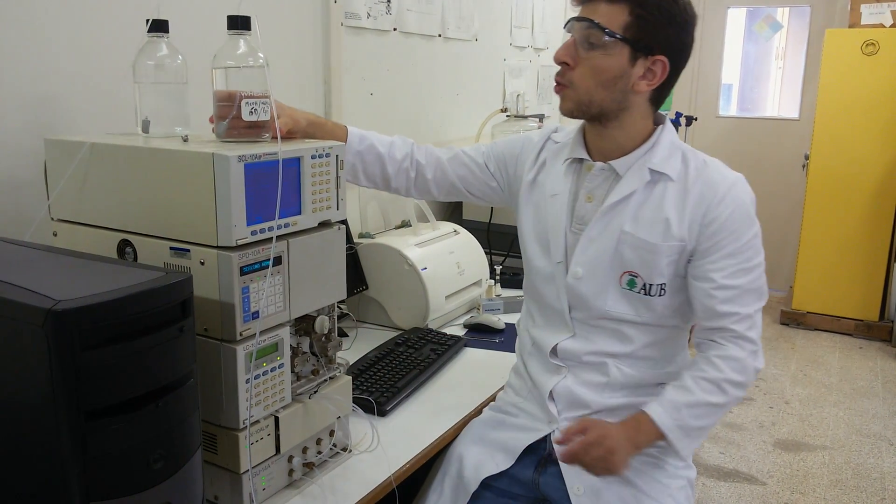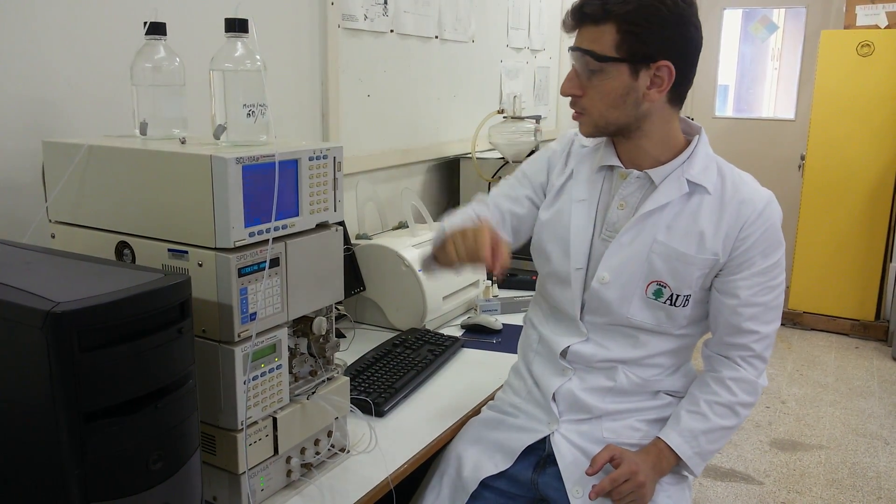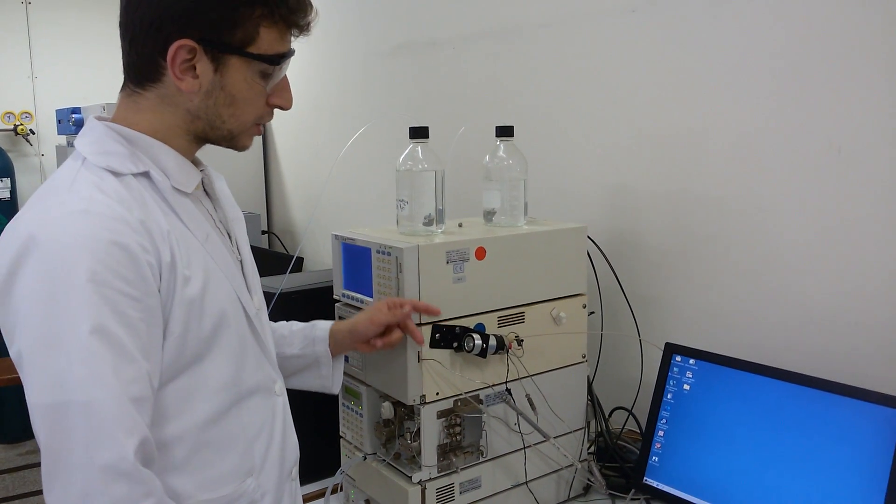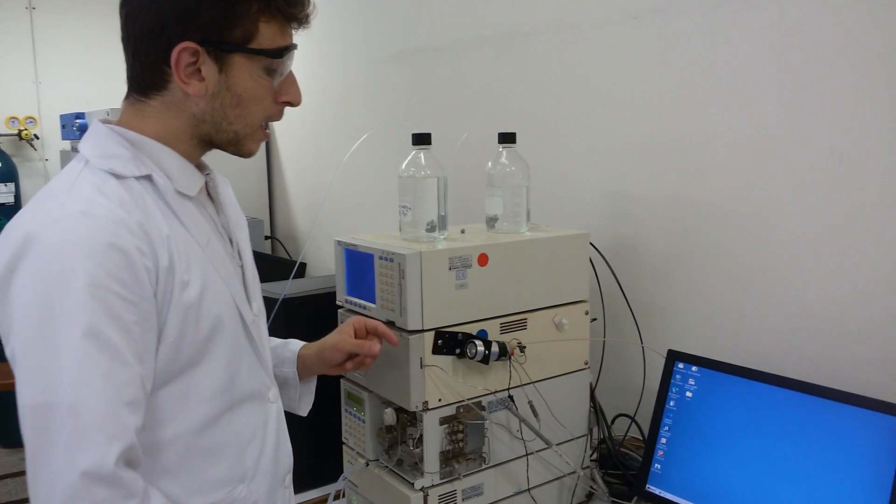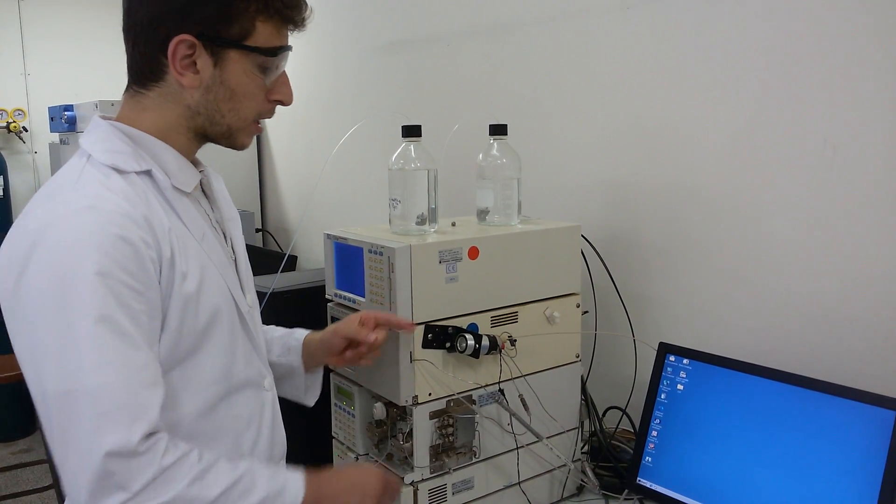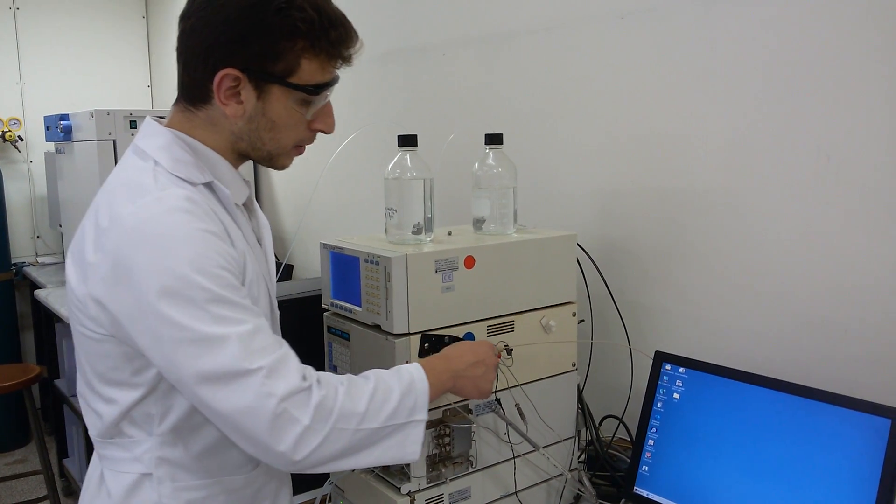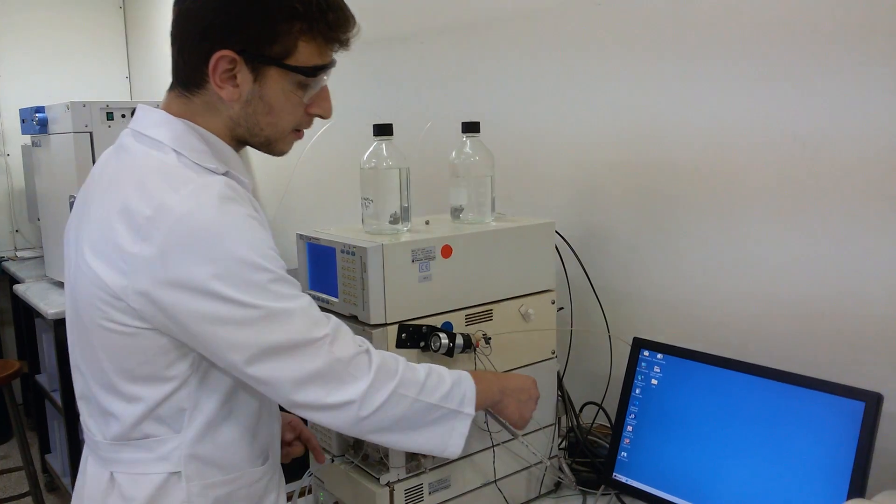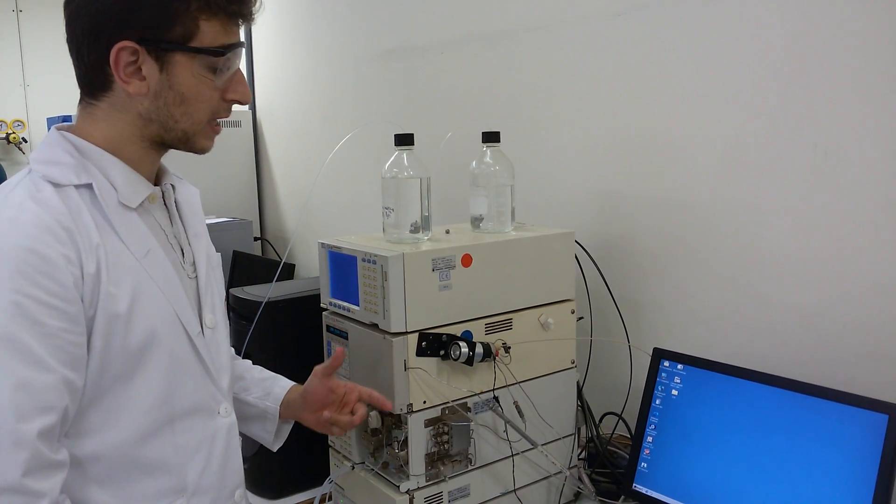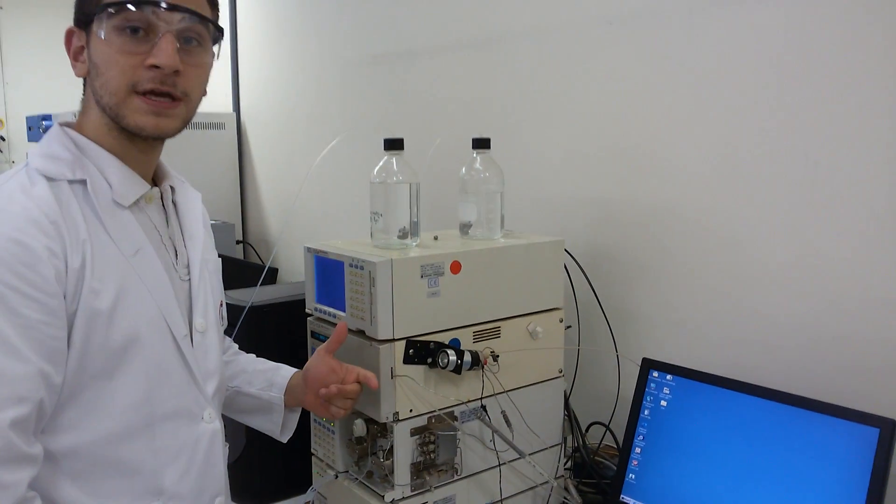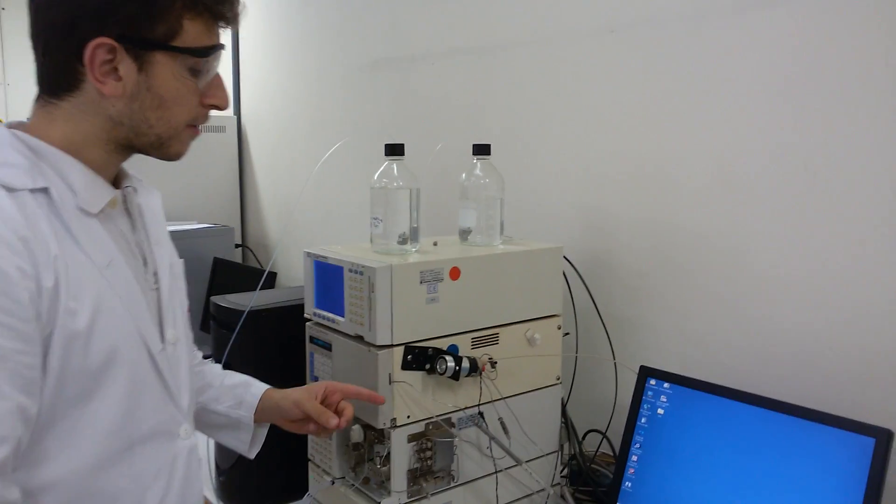The pumps will press the mobile phase into the injector. So, this is our injector. With the syringe, we inject our sample inside. The mobile phase will come and carry our sample through the loop. The loop will then transfer our sample through the guard. This guard serves as our last filter in order to remove every impurities in our sample.